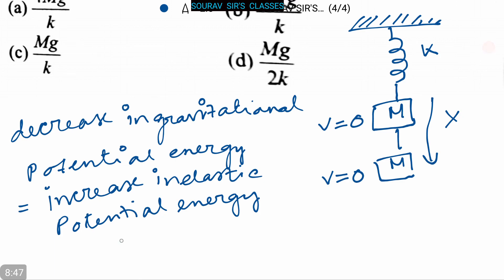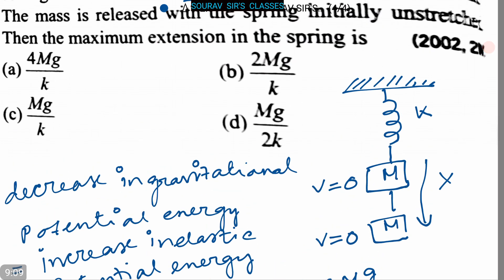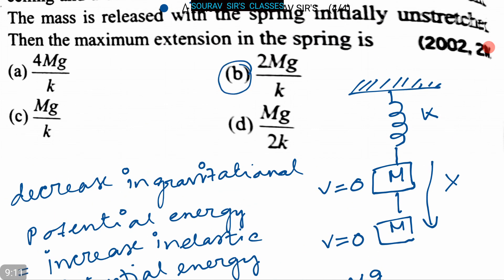So we can write it as Mgx equals (1/2)kx². We can rewrite this as x equals 2Mg/k. So option B, that is 2Mg/k, is the correct answer. The maximum extension of the spring is 2Mg/k. This is our answer.